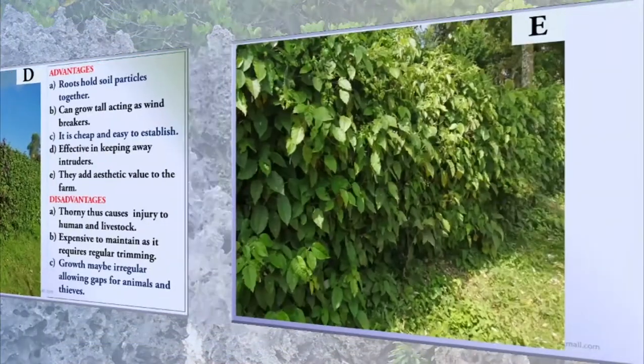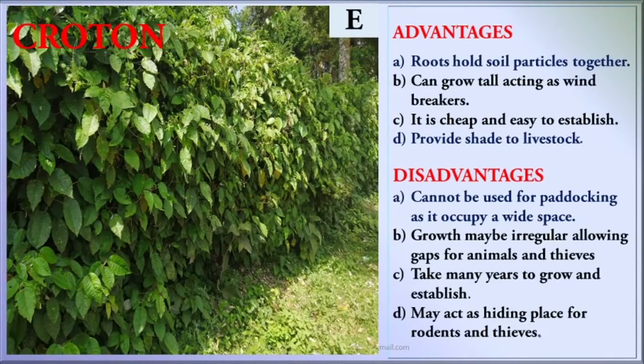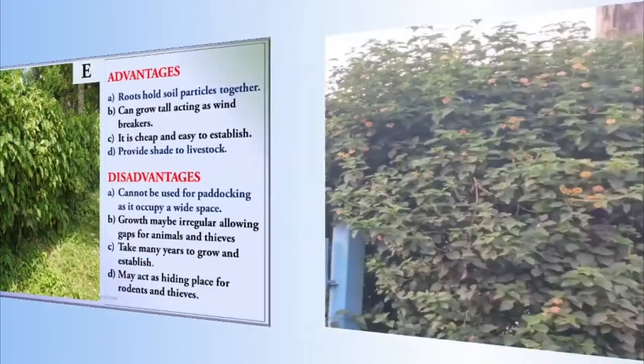Fence E is Croton. Croton's advantages: the roots hold soil particles together; they can grow tall, acting as windbreakers; it is cheap and easy to establish; and it provides shade to livestock. The disadvantages include: it cannot be used for paddocking as it occupies a wide space; growth may be irregular, allowing gaps for animals and thieves; it takes many years to grow and establish; and it may act as a hiding place for rodents and thieves.